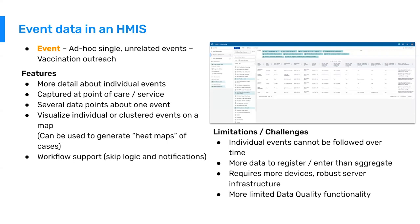Event data typically requires more devices and significantly more robust server infrastructure. You're capturing data at lower levels — maybe community or facility level — and capturing a lot more data, which means you need more powerful, higher-spec servers and infrastructure. With event data, we also have more limited data quality functionality natively built into DHIS-2, because event data can take all kinds of shapes and forms, making it hard to build broad data quality functionality for every scenario. You can still do things like outlier detection and validation notifications, either after data entry or during it, but we have slightly more limited functionality for data quality with event data.